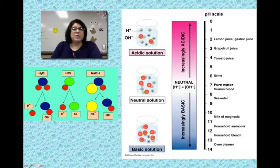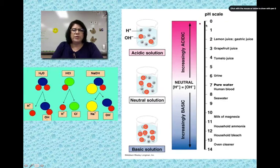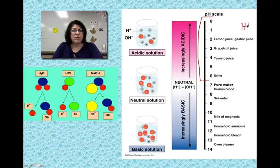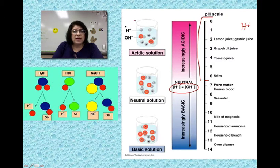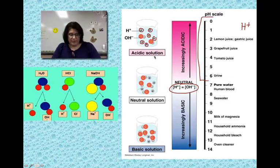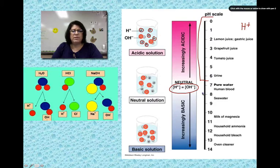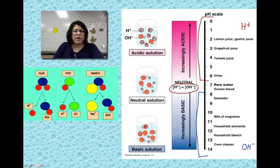Here's the actual pH scale with some examples. We have acids at the top from 1 to 6 — all acidic, meaning they have more hydrogen ion than hydroxide ion. At 7, the amounts are equal — that's neutral. The diagram shows that in an acidic solution there are more hydrogen ions than hydroxide ions. At the bottom, a base is somewhere between 8 and 14, with more hydroxide ion present. These are called basic or alkaline.